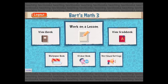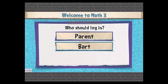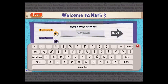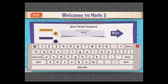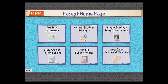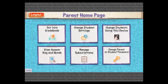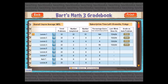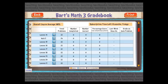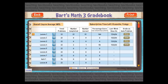Instead of going into the gradebook on the student side, I'm going to go into the gradebook on the parent side, so I'll log out as the student and log back in as a parent. This is the parent homepage — now I'll get into the gradebook. The gradebook is pretty similar to the 3.0 gradebook but there are a few changes. Notice on the upper left there's an overall course average — we always had an average for each lesson, but now we also have an average for the entire course so you can see that at a glance.